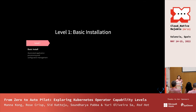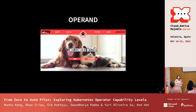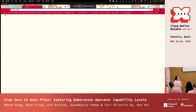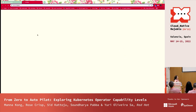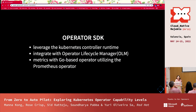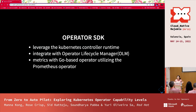Level 1 is basic installation — automated application provisioning and configuration management. This is our operand, the application that our operator was created for. It was created with a React front end, a Flask back end, and a Postgres database. Our operator is written in Go and we utilize the Operator SDK to orchestrate it, which came with a lot of things out of the box.